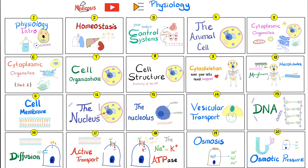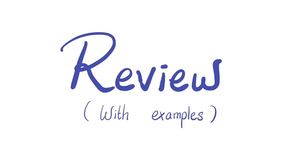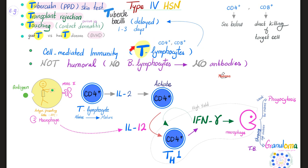Clinical examples of type 4: T lymphocytes — tuberculin skin test for tuberculosis, granuloma formation, transplant rejection such as acute and chronic rejection, but not hyperacute transplant rejection. Contact dermatitis — the story of poison ivy, wearing a nickel watch and developing a rash shaped exactly like the watch, trying new makeup and three days later developing a reaction exactly where the makeup was applied. Also, graft versus host disease.